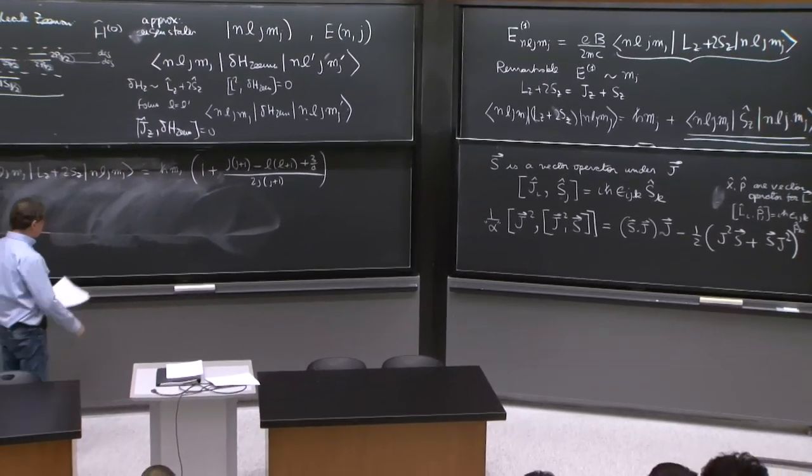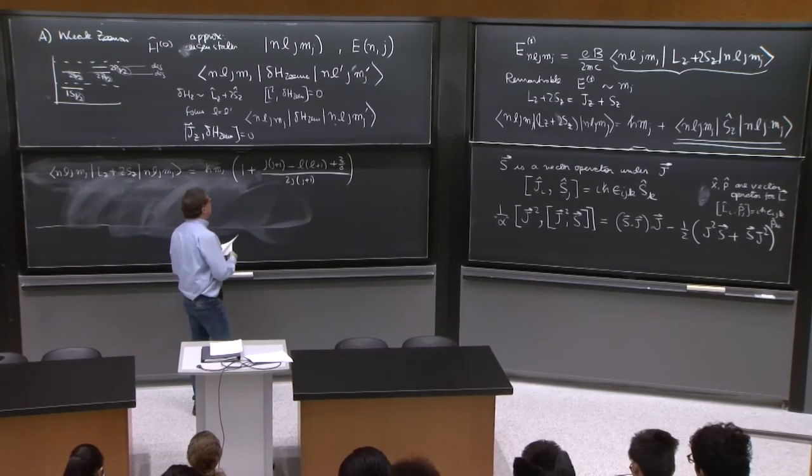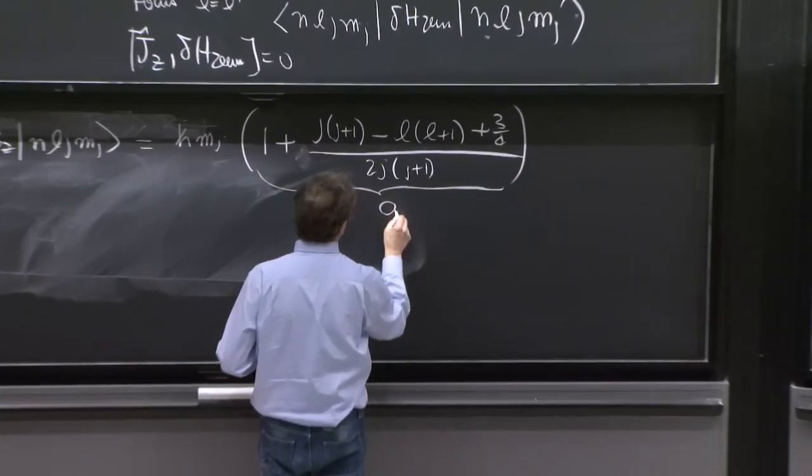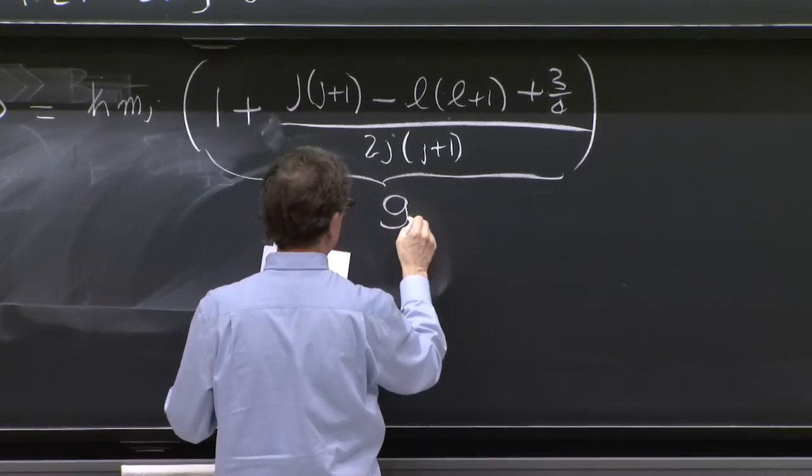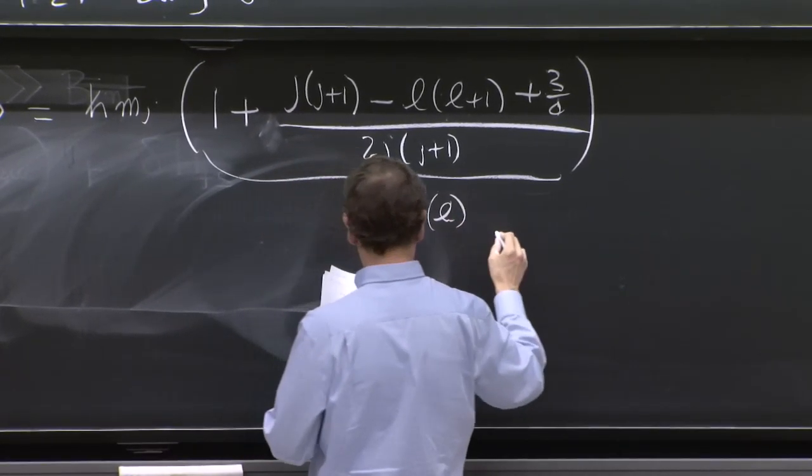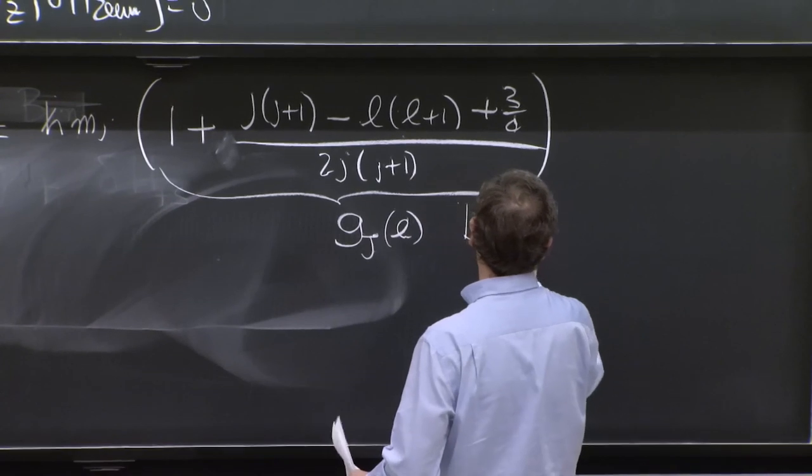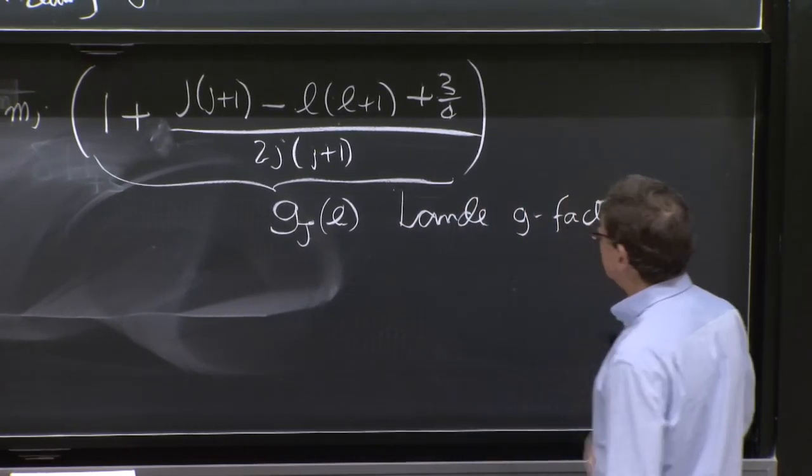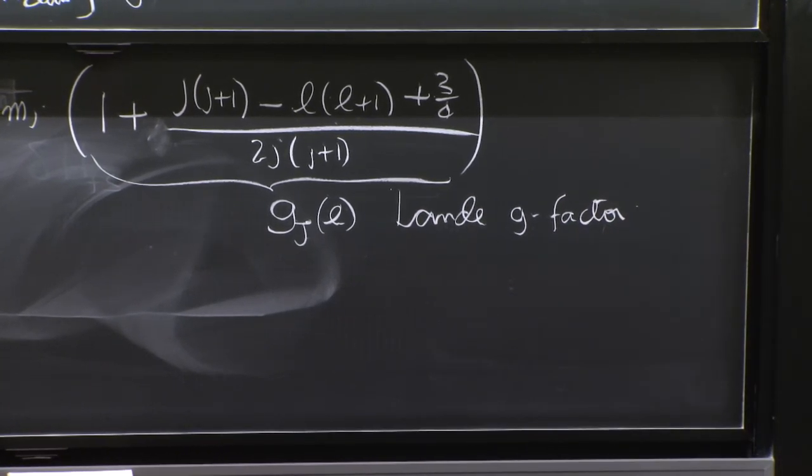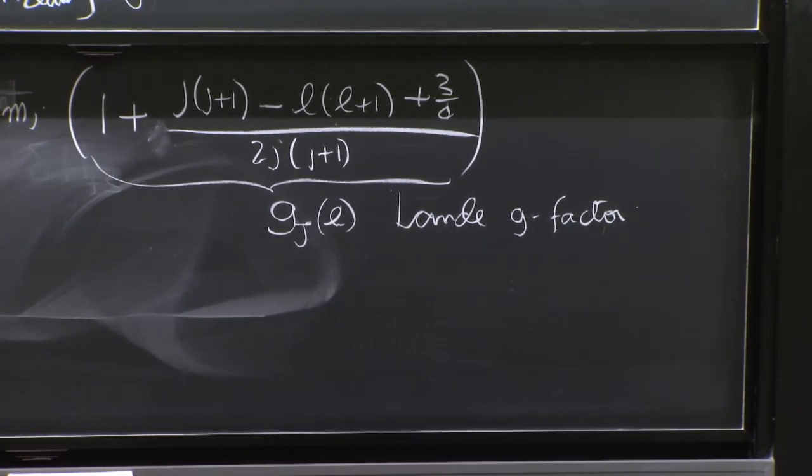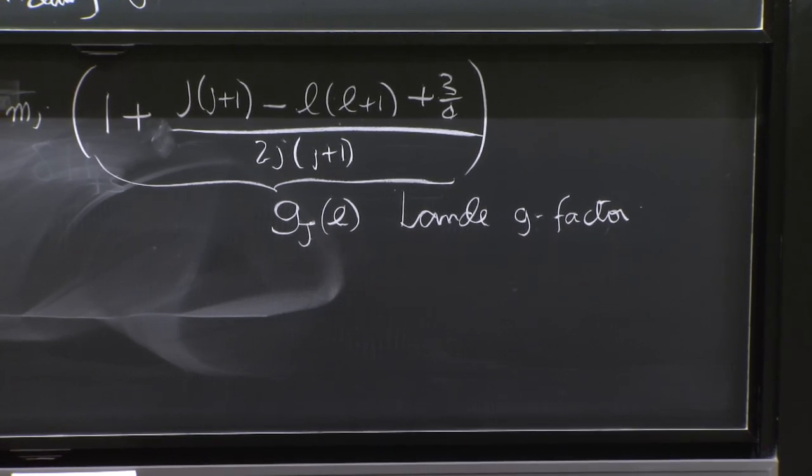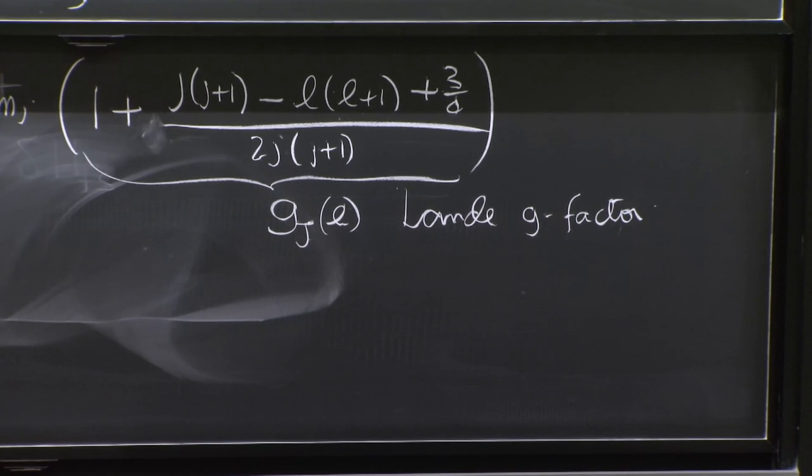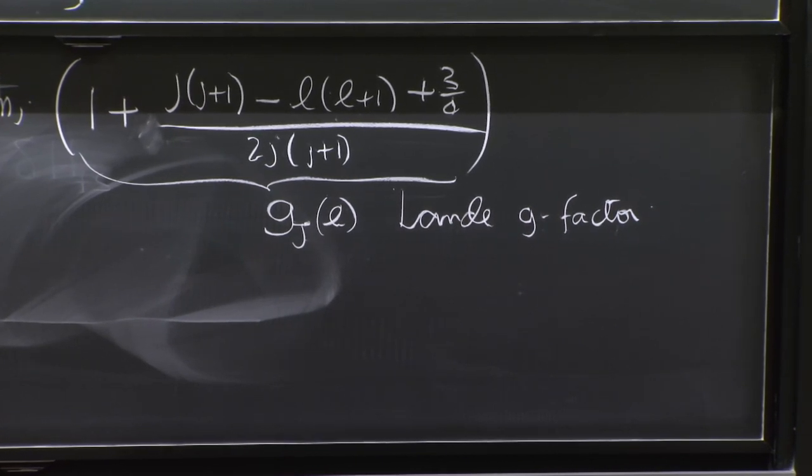It's probably a good time to introduce notation. And there's a notation here where this is called g sub j of l. And it's called the Landé g factor. It's a g factor in the sense that affects the energy levels, as if you were modifying the magnetic moment of the particle.